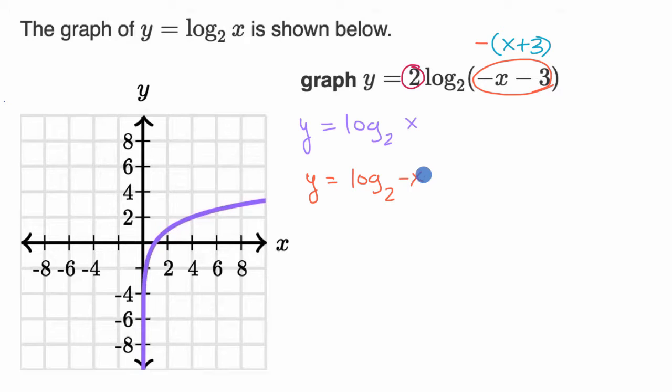In other videos, we've talked about what transformation would go on there, but we can intuit through it as well. Now, whatever value y would have taken on at a given x value, so for example, when x equals four, log base two of four is two, now that will happen at negative four. So log base two of the negative of negative four, well, that's still log base two of four, so that's still going to be two.